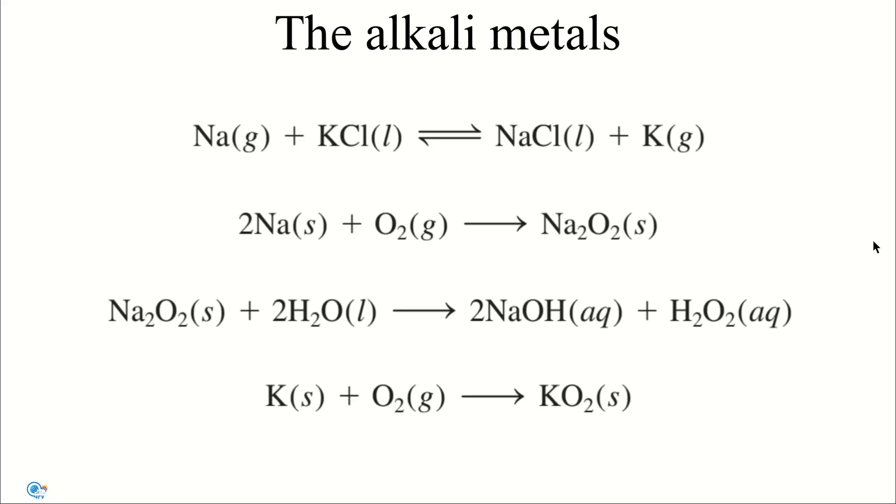Metallic potassium cannot be easily prepared by the electrolysis of molten potassium chloride because it's too soluble in the molten potassium chloride to float to the top of the cell for collection. Moreover, it vaporizes readily at the operation temperatures, creating hazardous conditions.